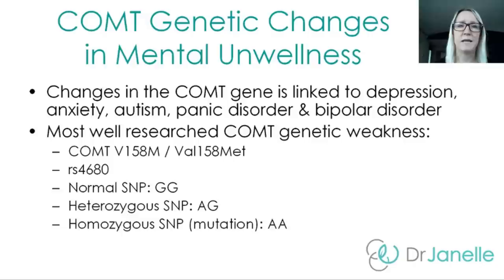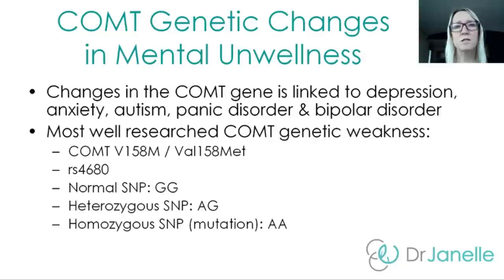Changes in COMT have been found to be linked with depression, anxiety, autism, panic disorder and bipolar disorder. There are quite a few different genetic SNPs for COMT, but the most well-researched one is COMT V158M, or VAL158MET. The VAL and MET refer to amino acid changes. The RS number for this genetic SNP is RS4680. If you have the normal SNP, your code will be GG; if you're heterozygous, it'll be AG; and if you're homozygous mutant, your code will be AA.